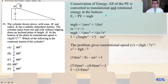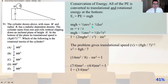We're going to apply conservation of energy. All of the potential energy is converted to translational and rotational energy at the bottom. So the initial energy equals potential energy equals mgh. And mgh therefore equals one half mv squared plus one half I omega squared, where omega equals v over r.